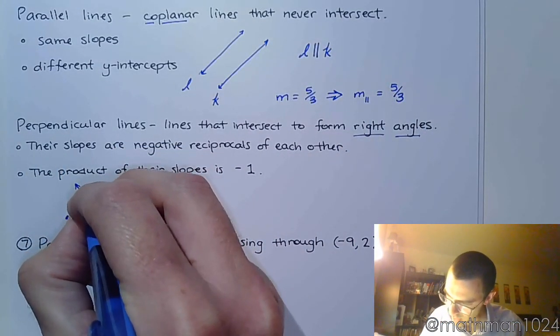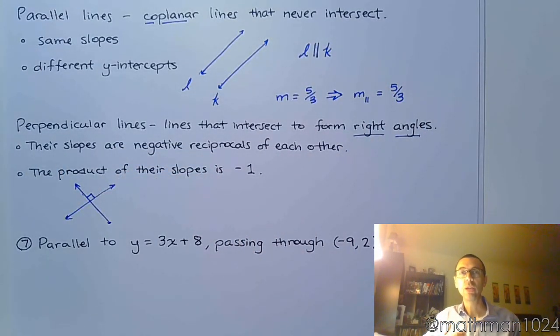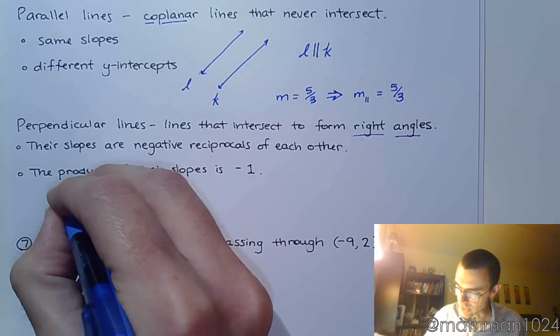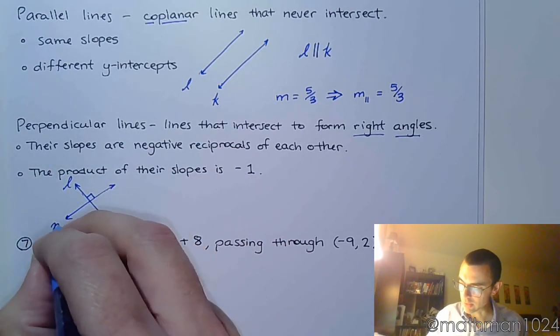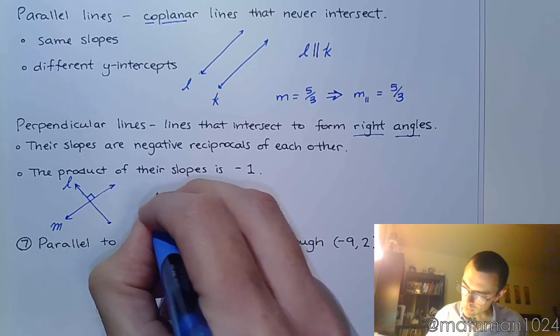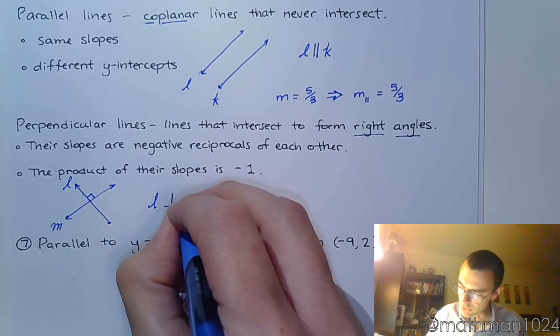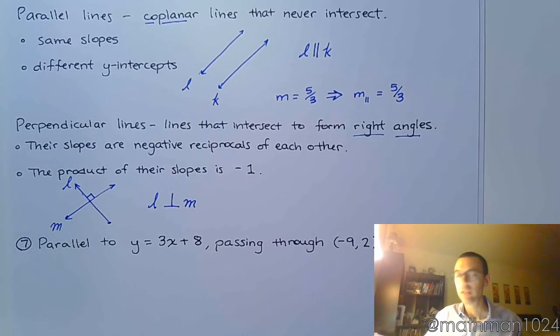And a lot of times we draw this little square right here to denote that these guys are forming right angles. So if I say this is line L and this is line M, we'd say that line L is perpendicular to line M.